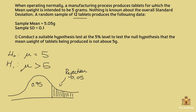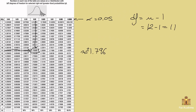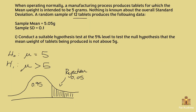We need to find the critical value again. The sample size is 12, so the degrees of freedom is still 11, and alpha is still 0.05. We find the same critical value as before: 1.796 on the positive side.